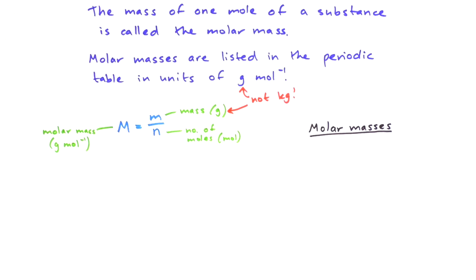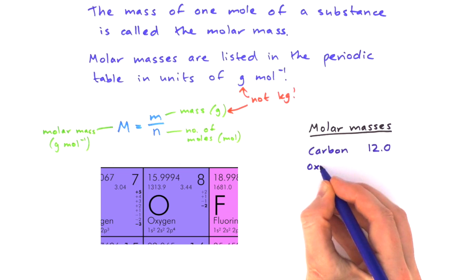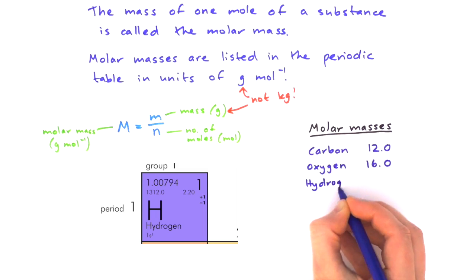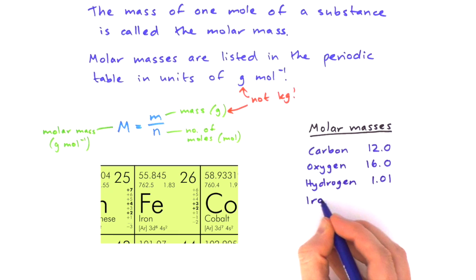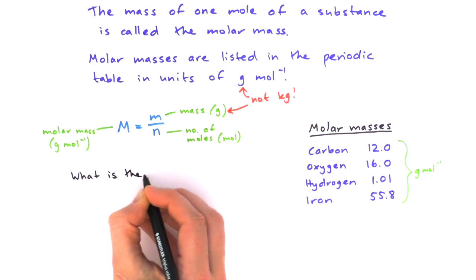Let's write down a few of these molar masses: carbon is 12.0, oxygen is 16.0, hydrogen 1.01, and iron 55.8. Now let's do some calculations with this formula.